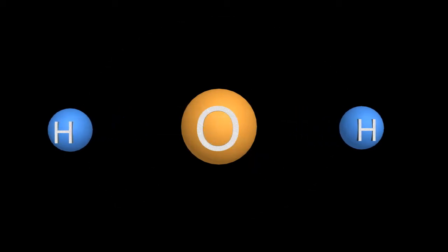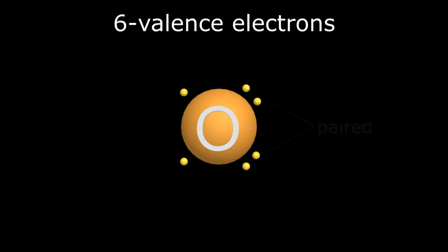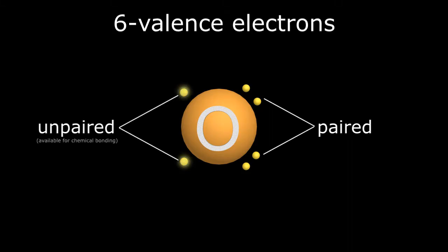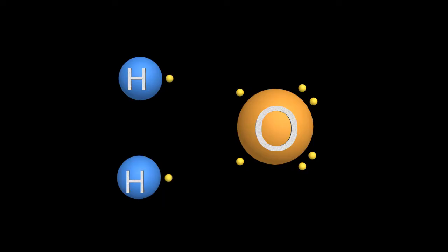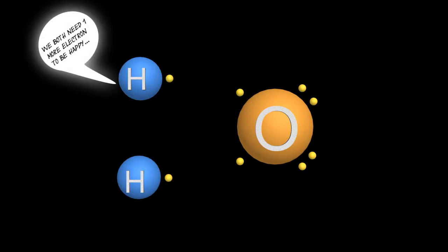Remember, oxygen has six valence electrons in its outer orbit, with two paired and two unpaired. The two unpaired electrons can participate in chemical bonding. To complete its outer orbit, two more electrons are necessary to achieve its noble configuration of eight orbiting electrons. Hydrogen has a single orbiting electron in its lone S shell and needs one more to obtain its noble status of two orbiting electrons.